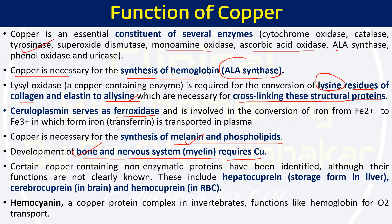There are also non-enzymatic copper-containing proteins. Examples include hepatocuprin — the storage form in the liver — cerebrocuprin in the brain, and hemocuprin in red blood cells. These non-enzymatic proteins have been identified in different organs, though their functions are not entirely clear. Hemocyanin is a copper-containing protein complex found in many invertebrates, functioning like hemoglobin for oxygen and carbon dioxide transport, equivalent to the role hemoglobin plays in vertebrates.